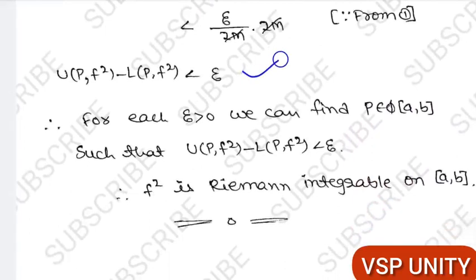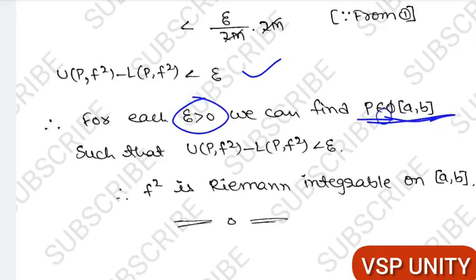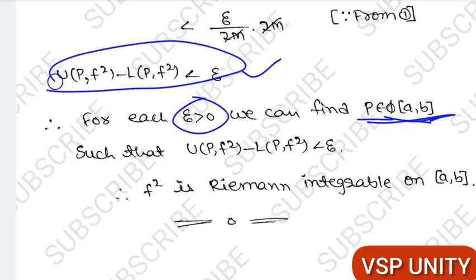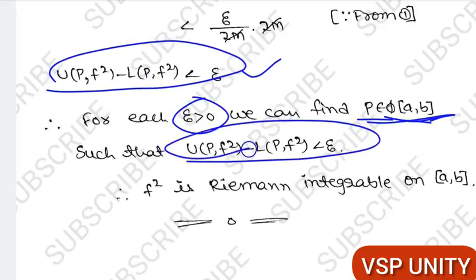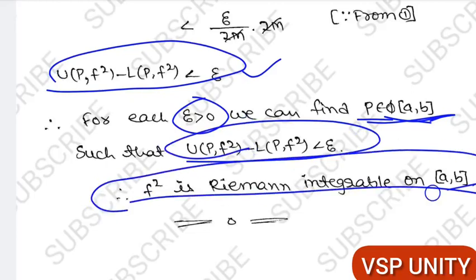Therefore, for each ε > 0 we can find a partition P belonging to Φ[a, b] such that U(P, f²) − L(P, f²) < ε. Therefore f² is Riemann integrable on [a, b]. This is a very simple and easy theorem.